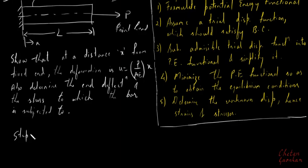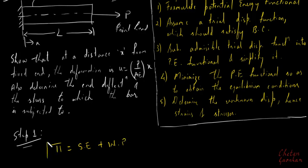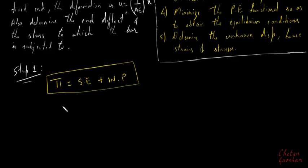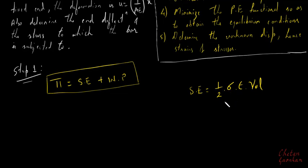Step one in the Rayleigh Ritz method is to formulate the potential functional: π equals strain energy plus work potential. We have seen that the expression for strain energy is one-half times sigma times epsilon times volume — that is, one-half times stress times strain times volume.